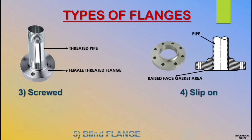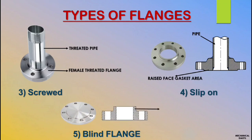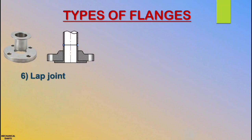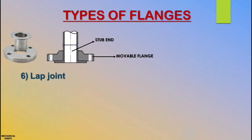Fifth flange is blind flange. It is mostly used for dummy purpose. Next is lap joint flange. Lap joint flange is very similar to slip-on flange — that's why many people have confusion between these two flanges. It has two parts: stub end and movable flange. Lap joint flange is movable, so we can align the flange joint easily. One end will be welded and the other will have free movement — that's the stub end.